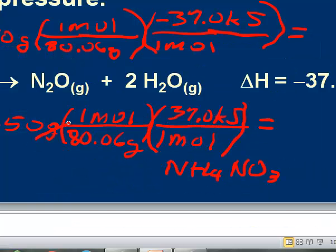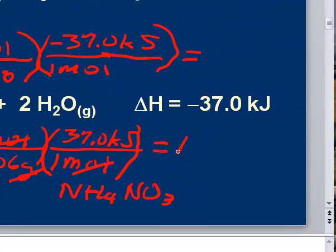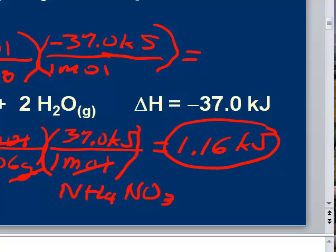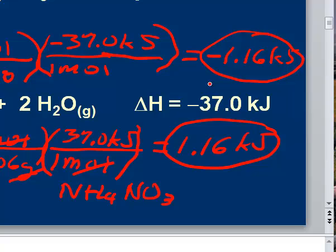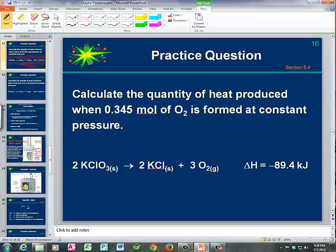Checking the math: grams over grams cancels, moles over moles cancels, and we wind up with 1.16 kJ of heat produced in this reaction. If the problem had asked for the delta H when 2.50 grams of ammonium nitrate decomposed, you would include the negative sign and the answer would be negative 1.16 kJ. That's only if you're asked for delta H — in this case, it was magnitude only.